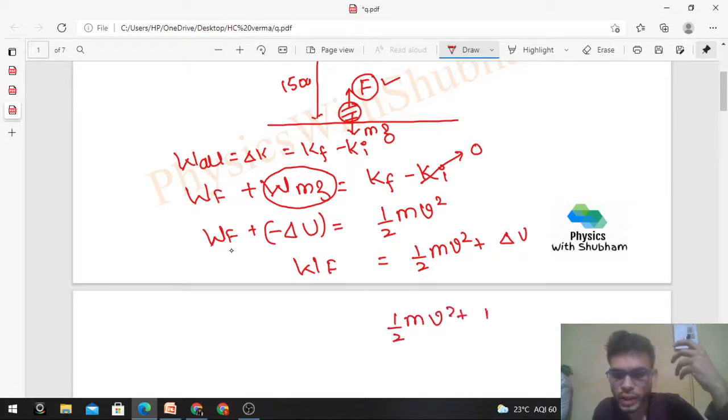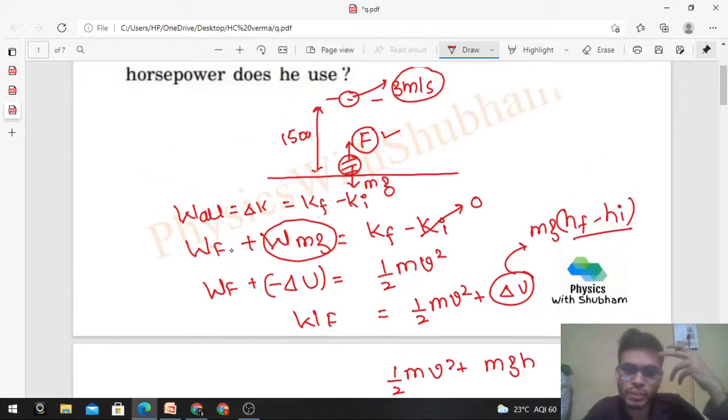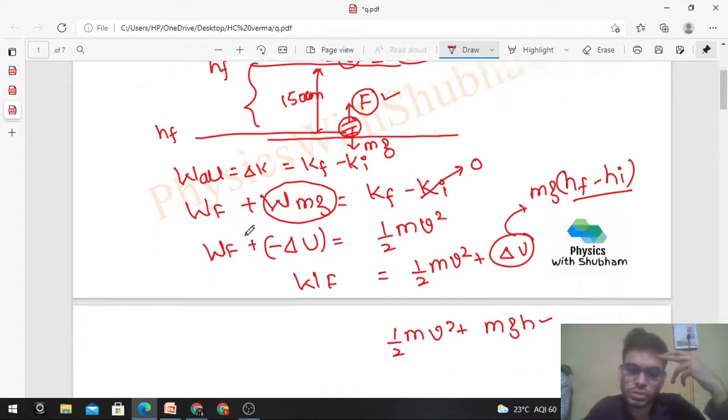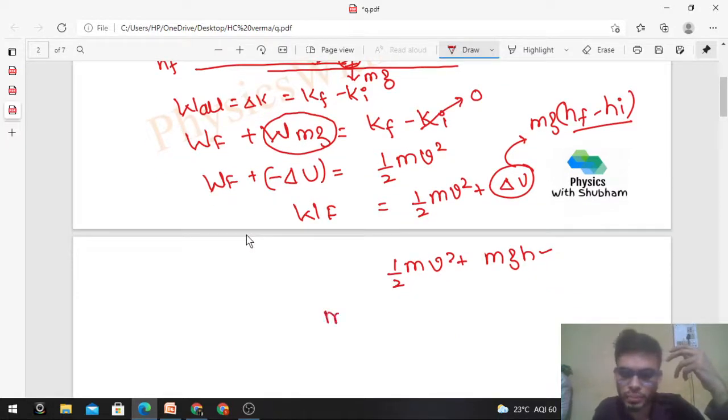Work done by F is half mv squared plus mgh. What is delta U? That is mg times h final minus h initial. The height difference given is 150 centimeters, that is your h. So we have m times (v squared over 2 plus gh).